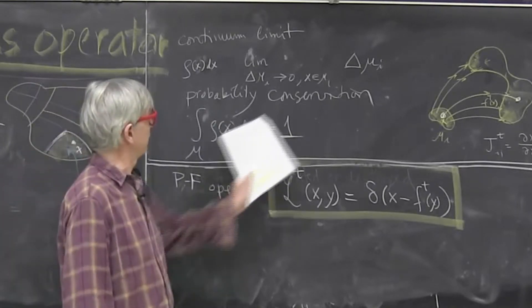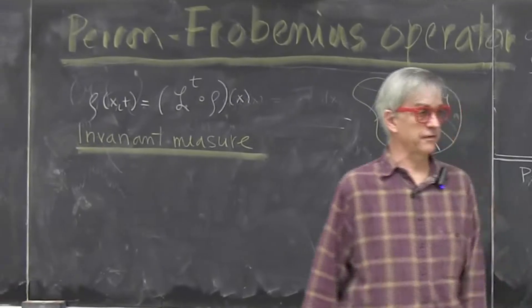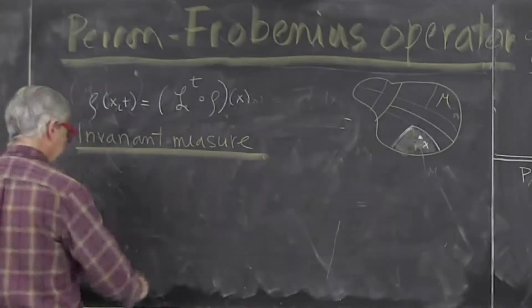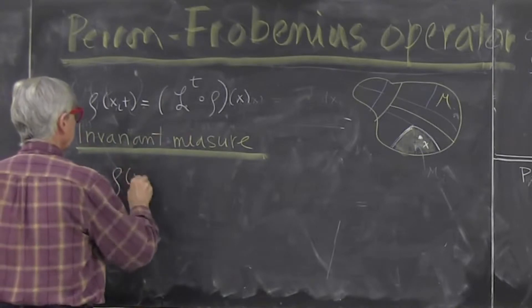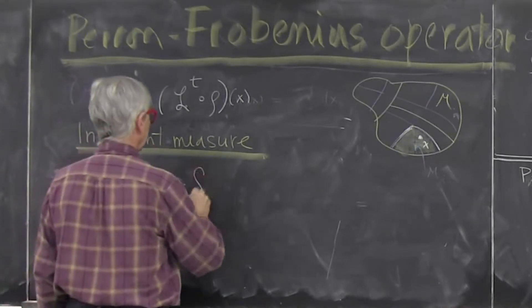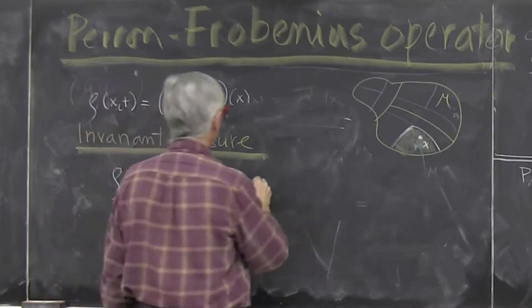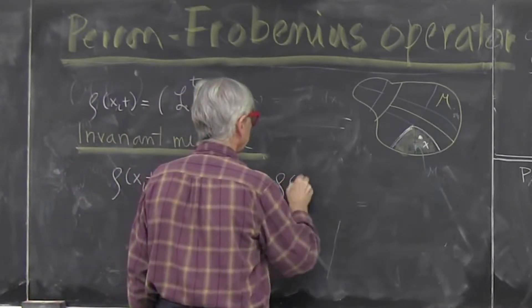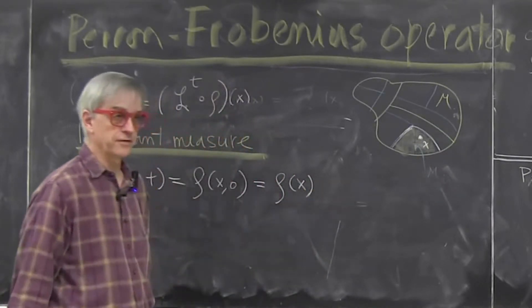Any coarse graining, no matter how refined, will give you the same density function. So invariant measure is the obvious thing. It says that density at times t is the same as it always was. So you can even drop time and just call it some function defined on the space.